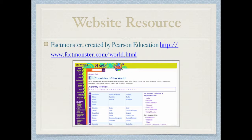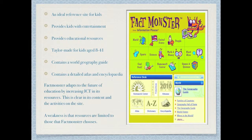A brilliant website reference for kids is FactMonster. It provides students with both entertainment and educational resources. It is an excellent resource for SOS and Geography as it contains a World Geography Guide with a detailed atlas and encyclopaedia with profiles providing information on different countries, geography, maps, history, population and more.